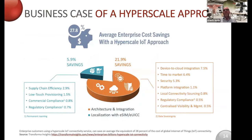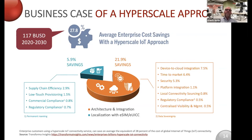What is the business case of a hyperscale approach? This is research done by Transforma Insights, an analyst firm. They concluded that if enterprise customers select an operator with a hyperscale IoT connectivity service, they can save on average the equivalent of 28% of the total cost of global IoT connectivity. That equates to an astonishing 117 billion US dollars over the next 10 years. Most of the savings come directly or indirectly from the programmable IoT connectivity control and security layer. Our white paper includes a link to that research.